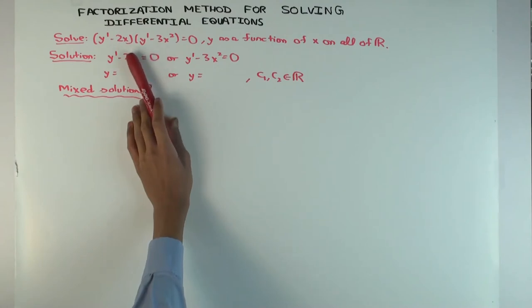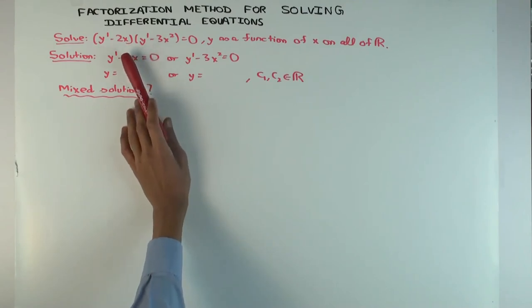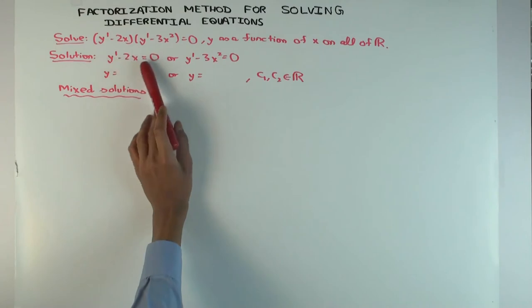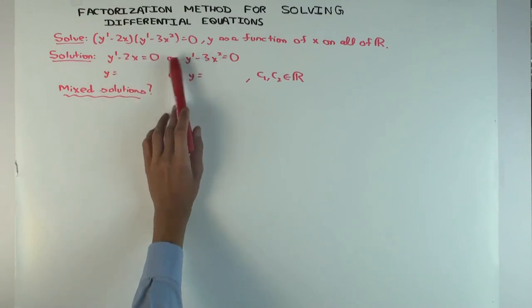Whenever you have a first order second degree differential equation, you can actually use the quadratic formula to try to factor it, but you might get radicals. We'll see that in another example sometime. So we already have a factored form, and the idea is we try to solve each of the factor differential equations separately.